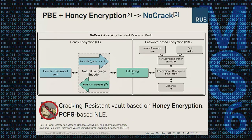The first implementation using password-based encryption and Honey Encryption in a cracking-resistant password vault is called NoCrack. It was introduced by Juttaji et al. at S&P 2015. Its Natural Language Encoder is based on a probabilistic context-free grammar approach.